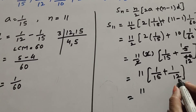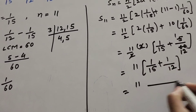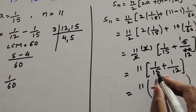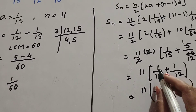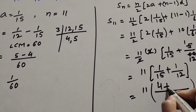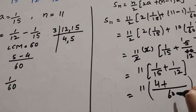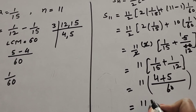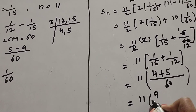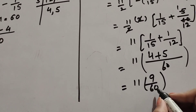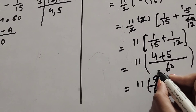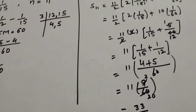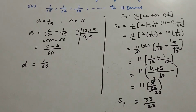So S₁₁ = 11 × (1/15 + 1/12). Using LCM 60: (60÷15)×1 = 4 and (60÷12)×1 = 5. So 11 × (4+5)/60 = 11 × 9/60. Simplify 9/60 by dividing by 3: 3/20. Therefore S₁₁ = 11 × 3/20 = 33/20. The sum of 11 terms of the given AP series is equal to 33/20.